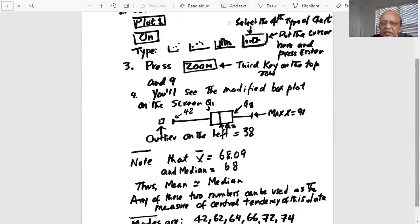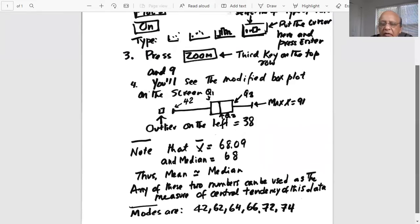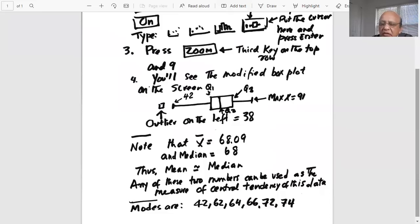Another point of note for this data set, the mean is 68.09 and median is 68, so mean is almost equal to the median. Any of these two numbers can be used as the measure of central tendency of this data. What are the modes? The modes are the numbers that are repeated more than once. All of these numbers have been repeated twice in this data set, so all of these are modes.